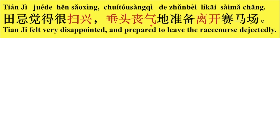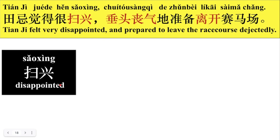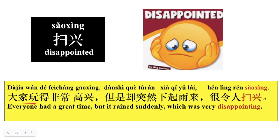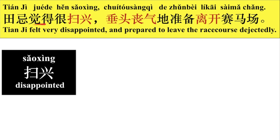田纪觉得很扫兴，垂头丧气的准备离开赛马场。因为他失败了，所以他觉得很扫兴。扫兴，例子：大家玩得非常高兴，但是却突然下起雨来，很令人扫兴。令就是to make，to let，就是使人很扫兴。